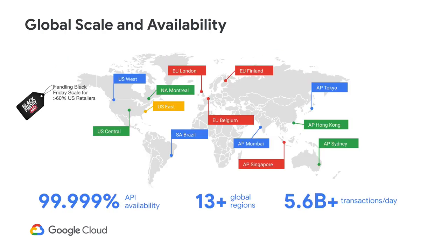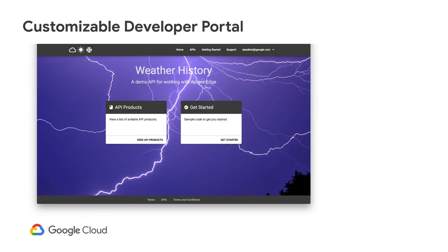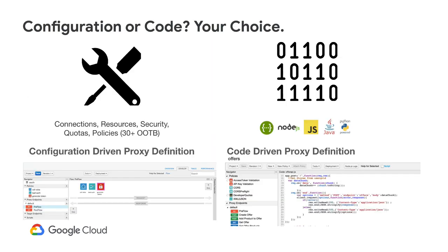Apigee Edge offers global scale and availability — hosted in 13 data centers around the world with historically 99.999% availability. The developer portal can be easily customized: kept simple for internal use or branded to match your website for external-facing portals. Apigee gives you a choice between configuration or coding — out-of-the-box policies let you drop in things like access token requests or response caching, while code-driven development lets you build custom policies in JavaScript, Java, or Python, and you can also host Node.js.